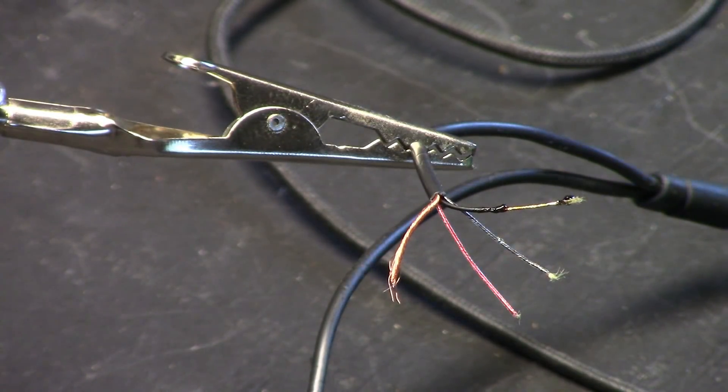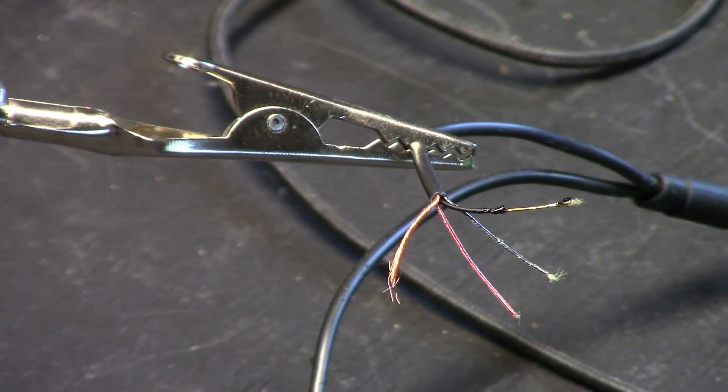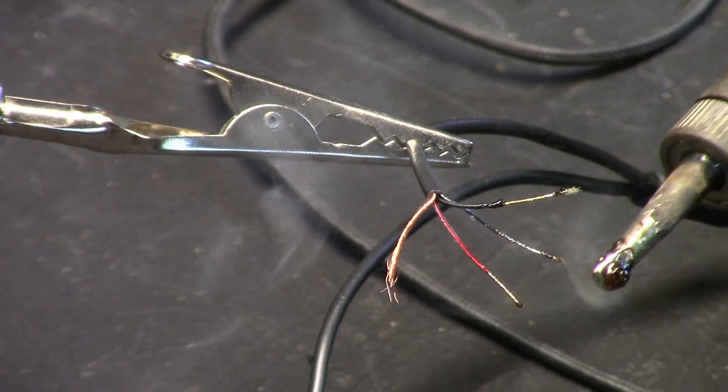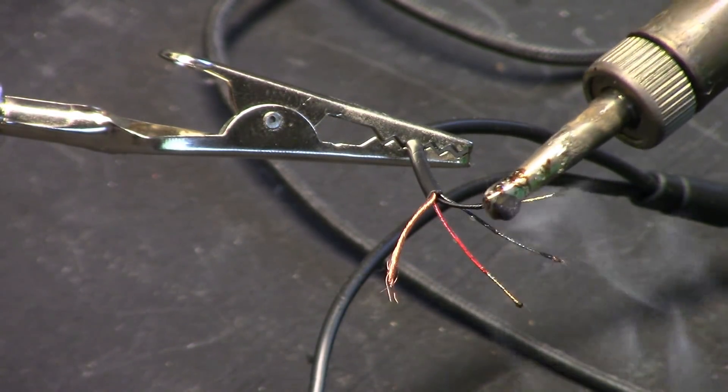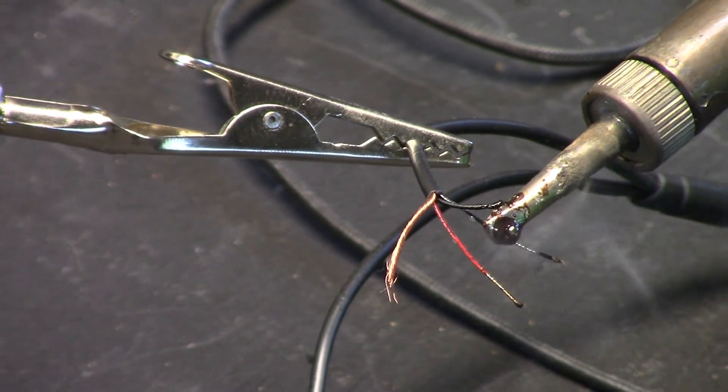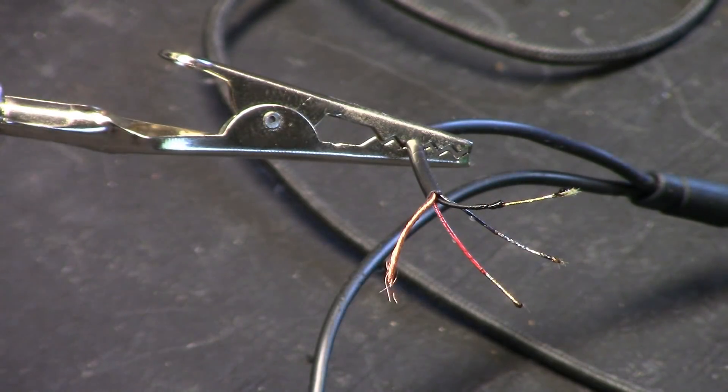You've got to give it time to melt the insulation away, the enamel insulation, so the solder can actually tin the wire. The enamel insulation gets all over the soldering tip so it must be wiped away on a sponge.